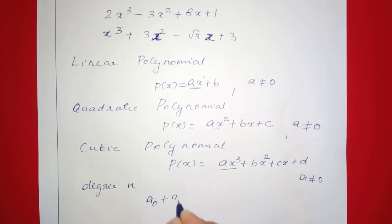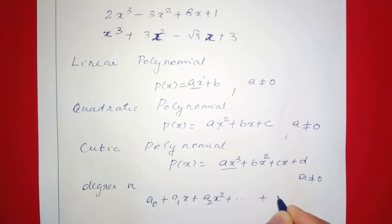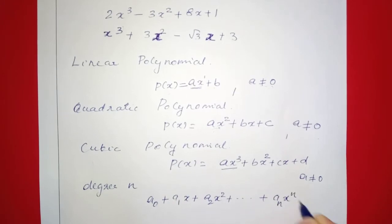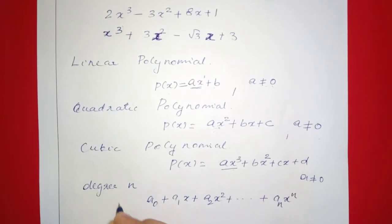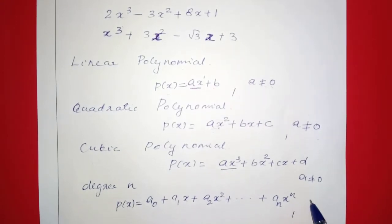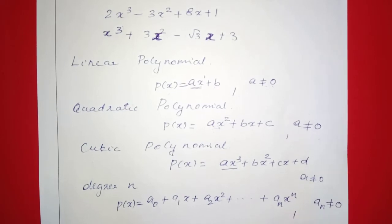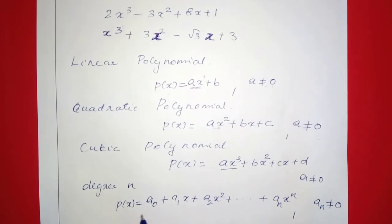The general form of a polynomial is: a0 plus a1 times x plus a2 times x squared plus ... plus an times x raised to n. Here an is not equal to zero, and n is the degree of the polynomial.